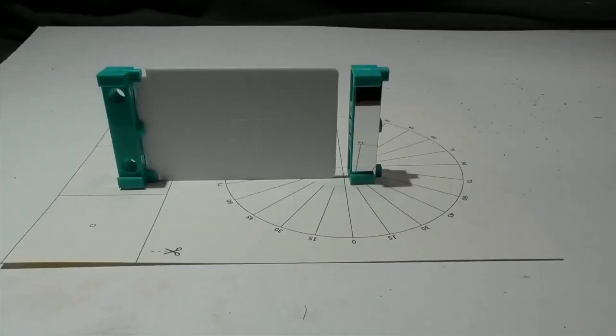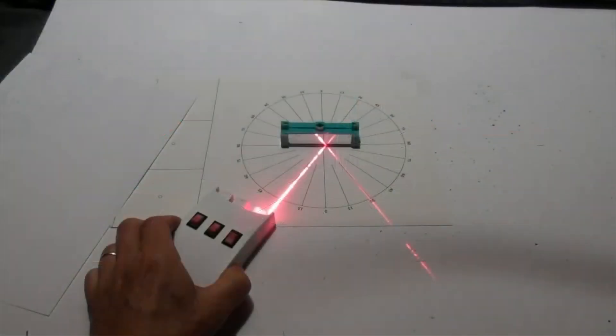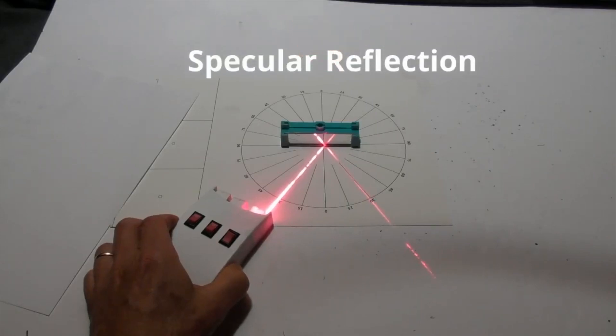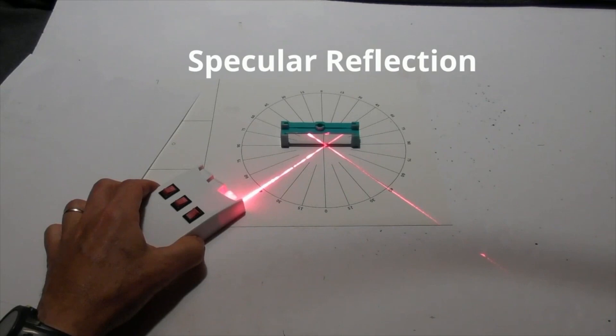I'll show you the difference between these two by using a shiny object like this mirror and a dull object like this plastic. Up first, let's reflect light from a mirror which is very shiny. It will be an example of specular reflection. Notice that the ray always reflects at the same angle.